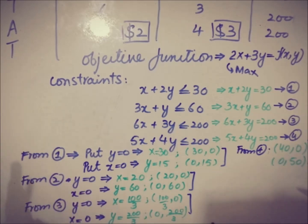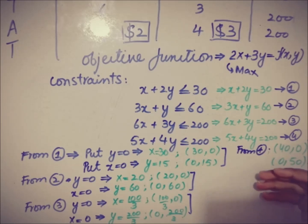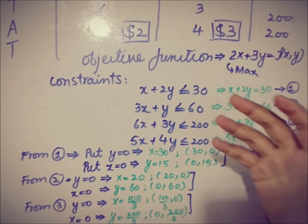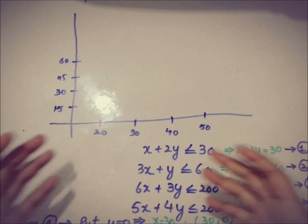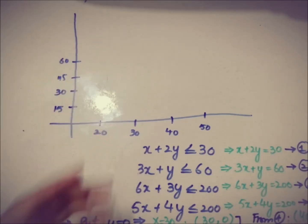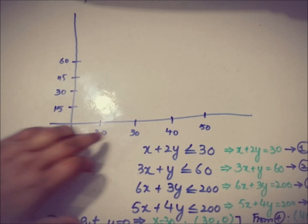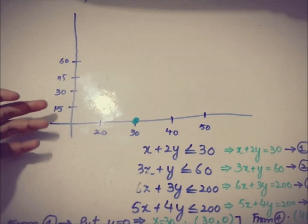Now we have the intercepts. The second step is to graph the constraints — to plot those intercepts. We will use these pairs of intercepts to figure out the optimal solution of this model. So I have the x and y axes. Now I'm going to plot the first pair: (30, 0) is this point, and (0, 15) is this point.